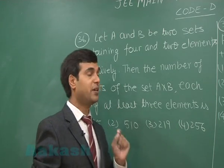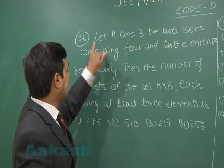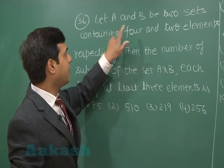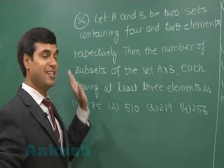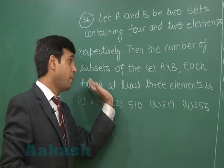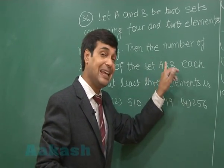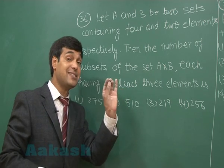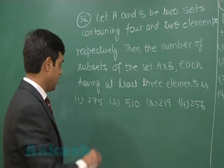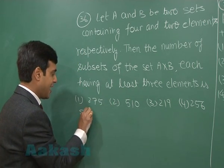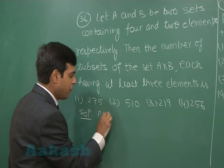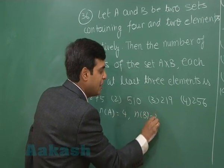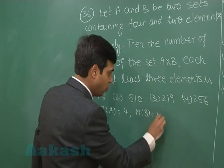Let us go to question number 36. Let A and B be two sets containing four and two elements respectively. Then the number of subsets of the set A cross B each having at least three elements is. We can start: number of elements in A is 4, number of elements in B is 2.